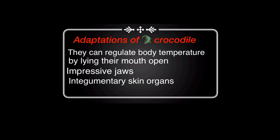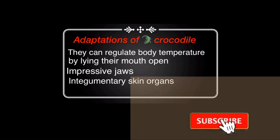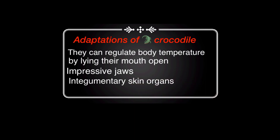Crocodiles can regulate body temperature by lying with their mouth open. They have immense jaws — the mouth is a speciality with two bone joints. You can see the picture of the crocodile's mouth. They also have integumentary skin organs, which are a speciality of their body that helps them live and survive.